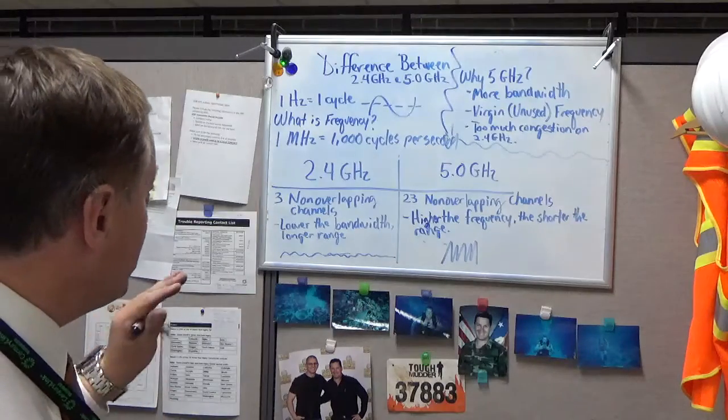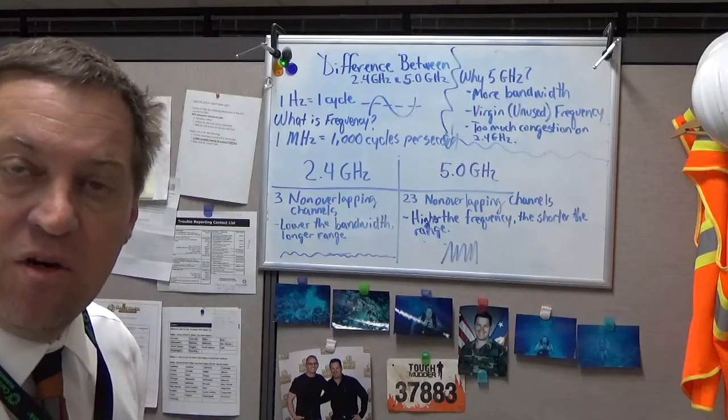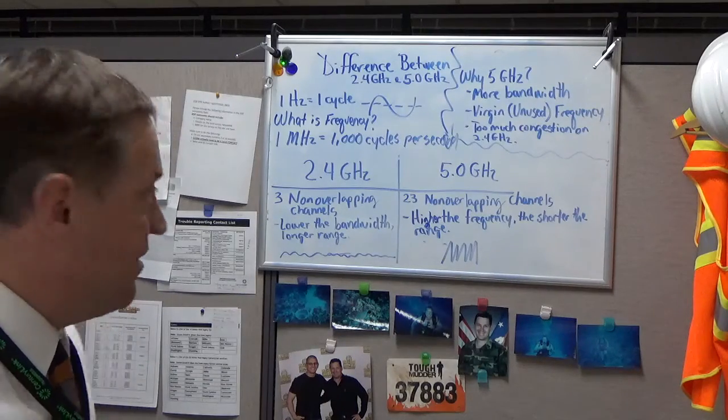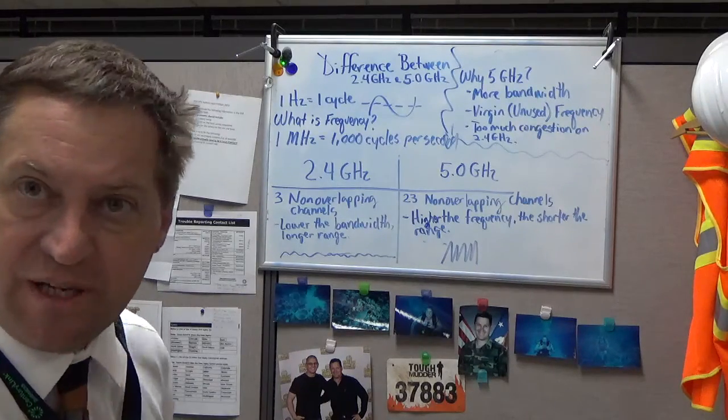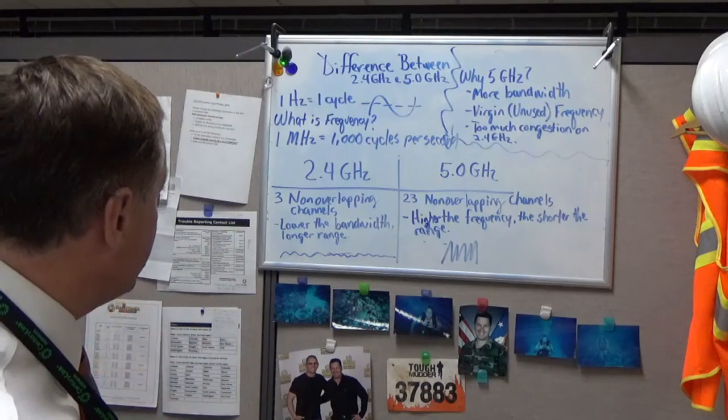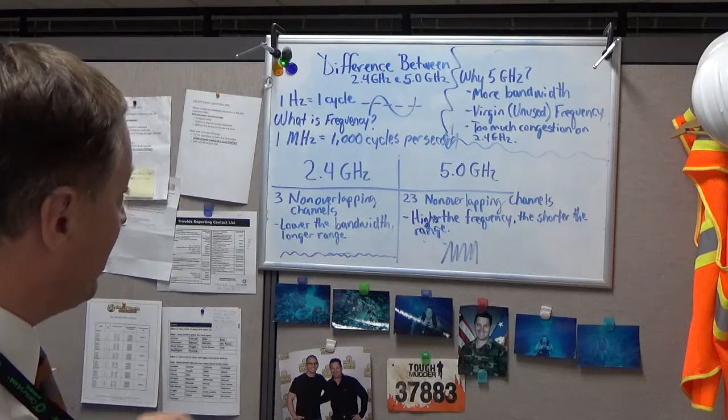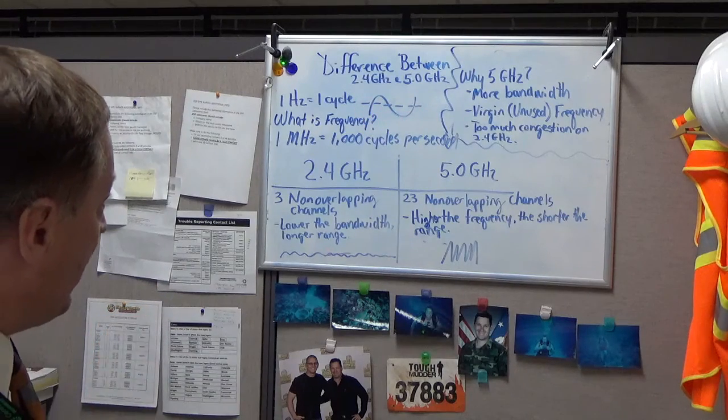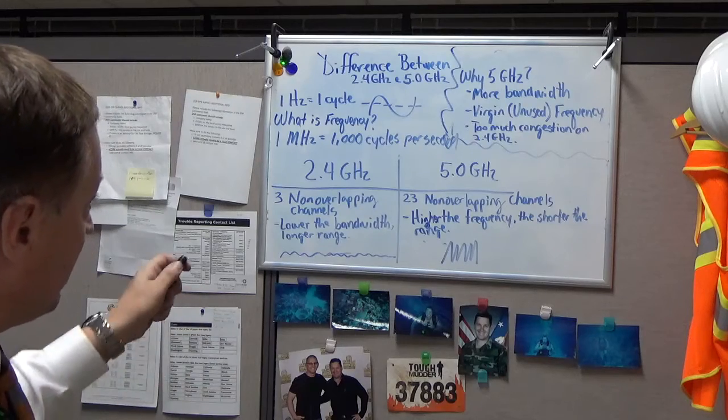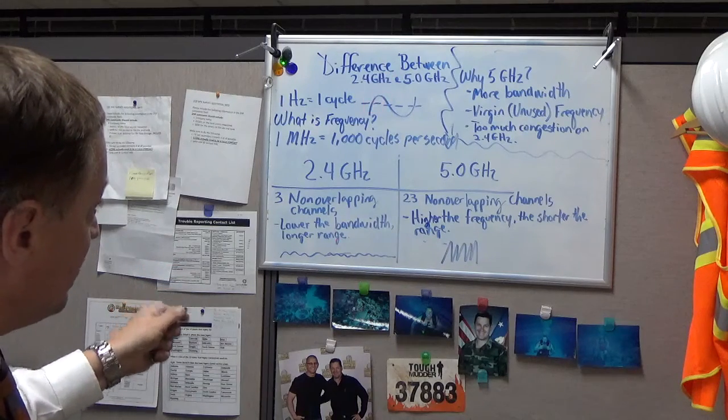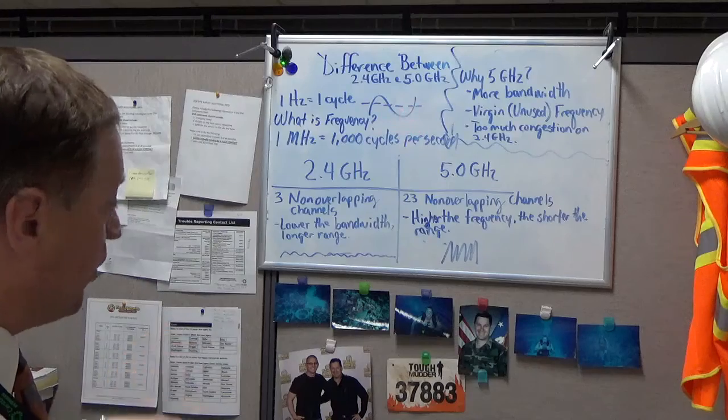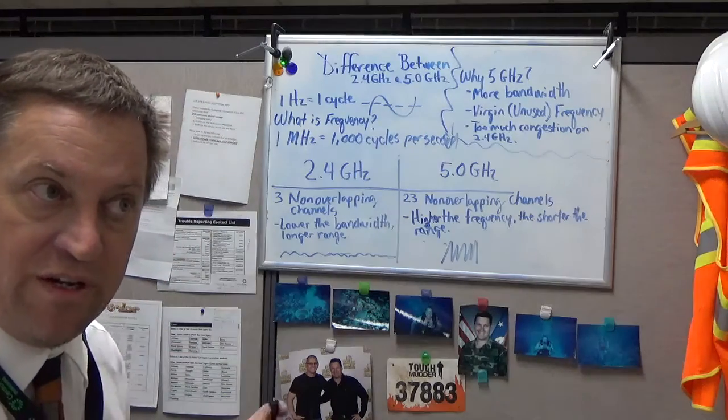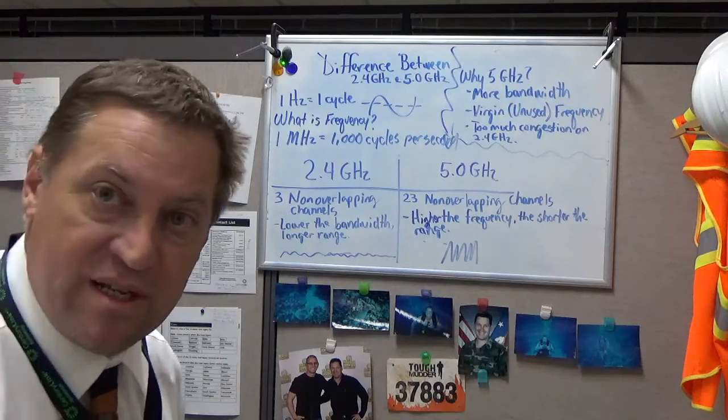The first thing we really need to understand is exactly what frequency is. Frequency is nothing more than how often something happens. One hertz equals one cycle. Up here you'll see this cycle in the form of a radio wave with a dotted line across it. The top half is your first 180 degrees. The bottom half going across that dotted line is the second half of your 180 degrees, completing one cycle.